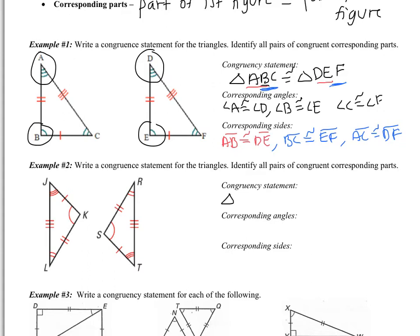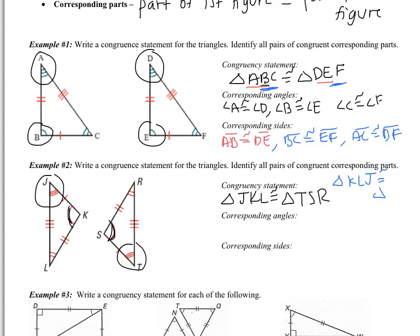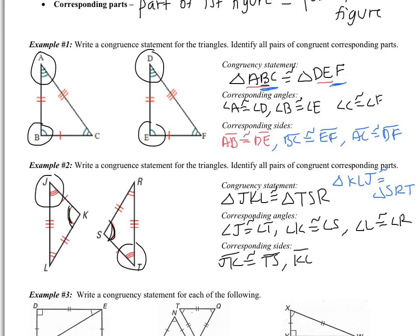For the congruency statement, I'm going to say triangle JKL is congruent to — you don't have to have JKL, it could be in a different order, but then your second triangle is going to be in the order that you have. Angle J is congruent to T, K is congruent to S, and L is congruent to R. For corresponding angles: angle J is congruent to angle T, angle K is congruent to angle S, and angle L is congruent to angle R. Corresponding sides: JK is congruent to TS, KL is congruent to SR, and JL is congruent to TR.